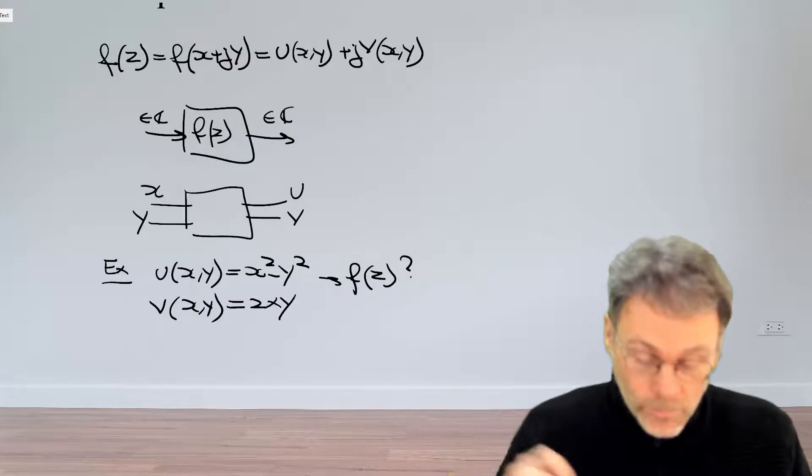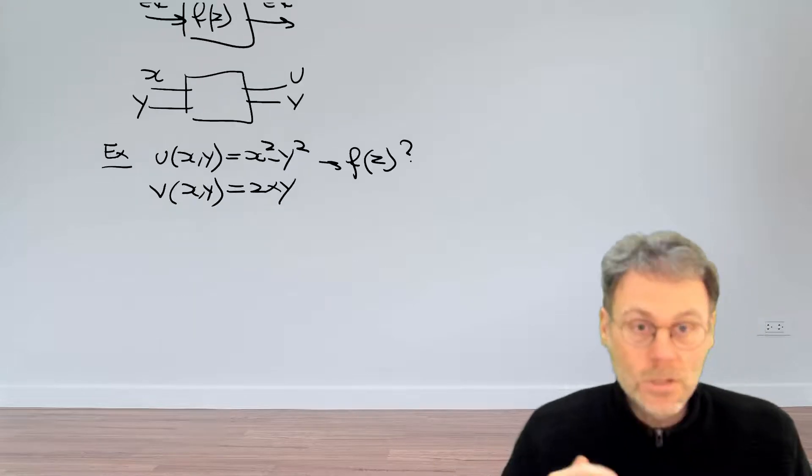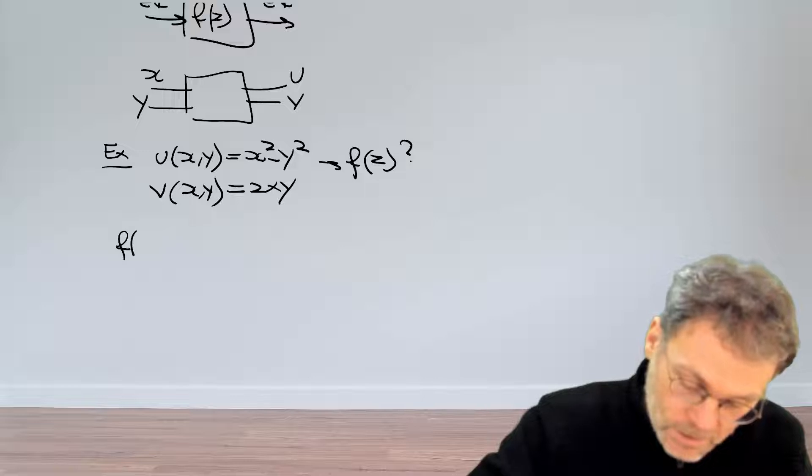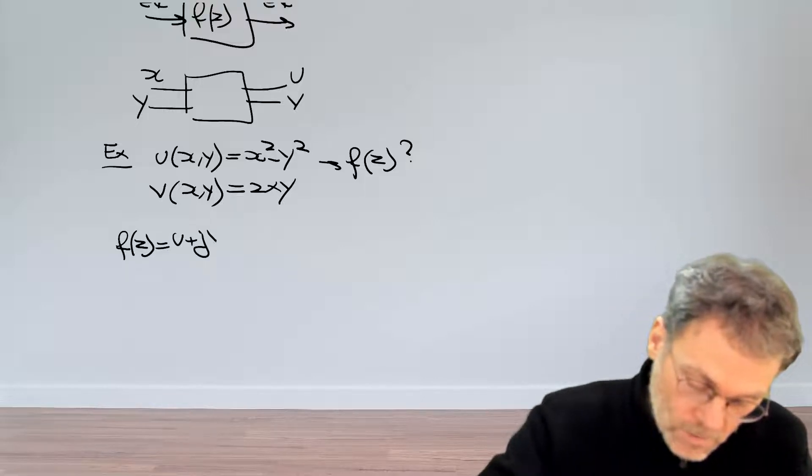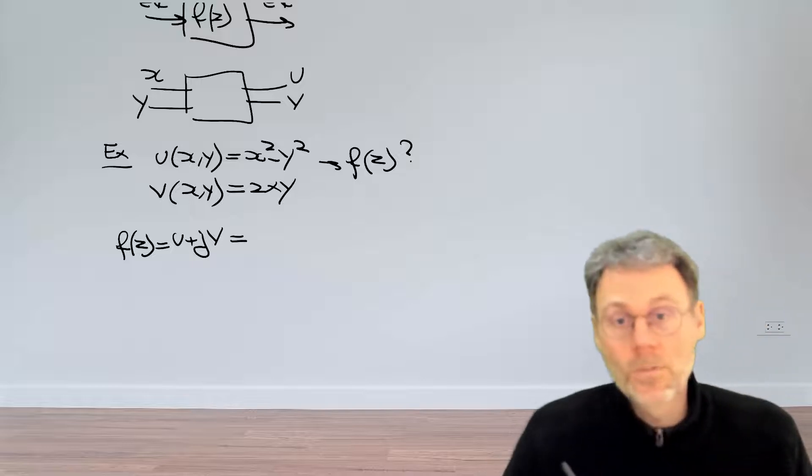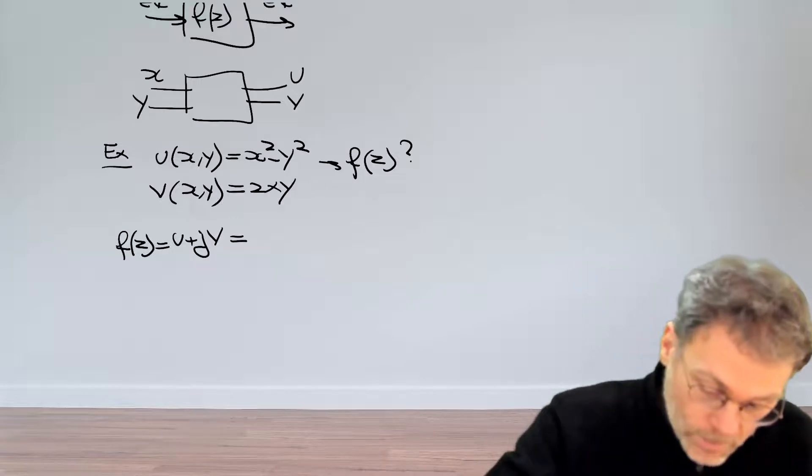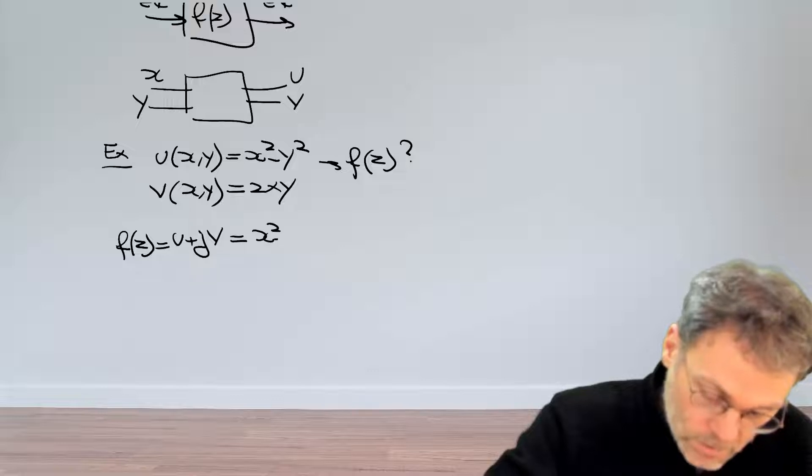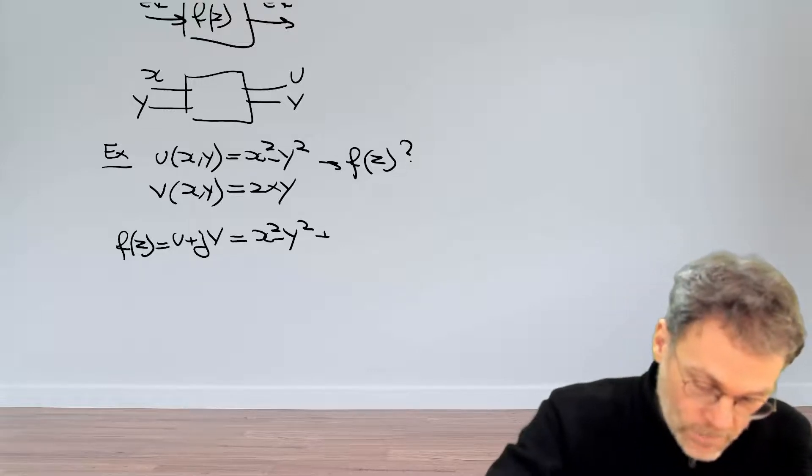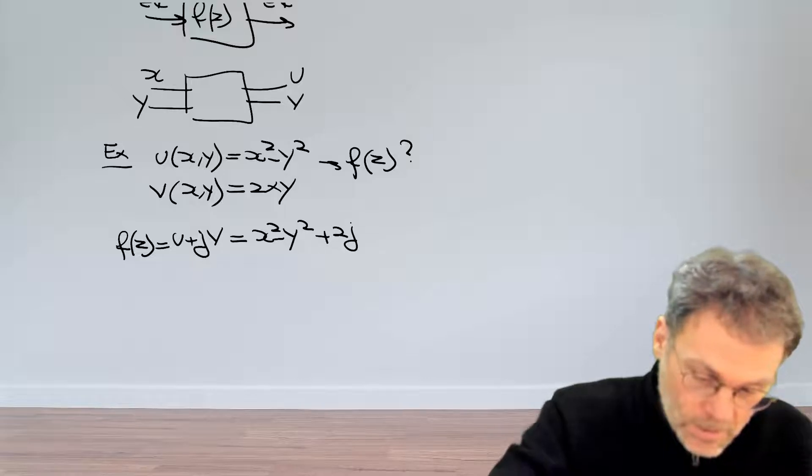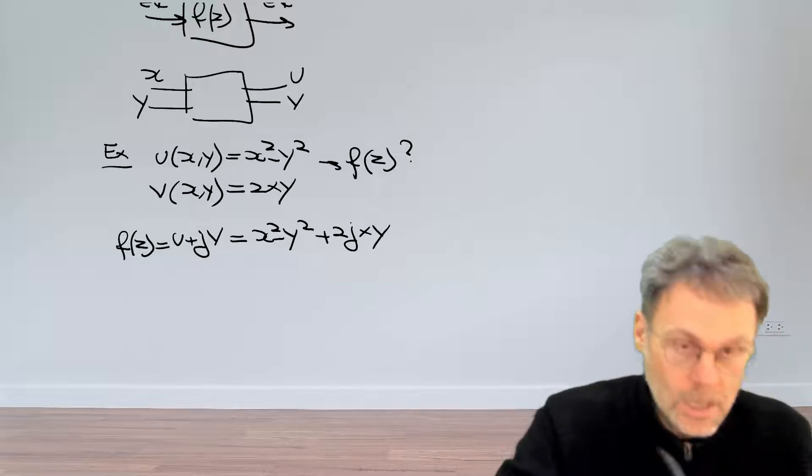Pretty straightforward, just apply the definitions. We've defined f of z as u plus jv, real part plus j times the imaginary part. Real part here was x squared minus y squared and then the imaginary part that will give us 2jxy.